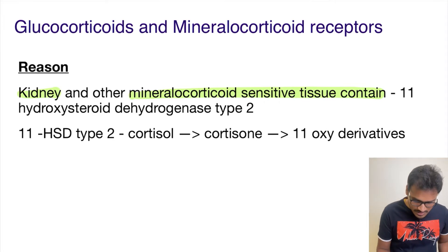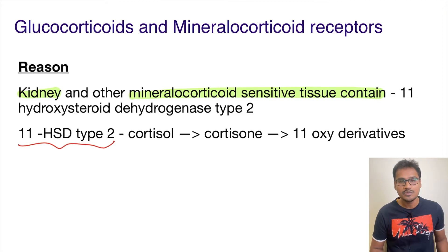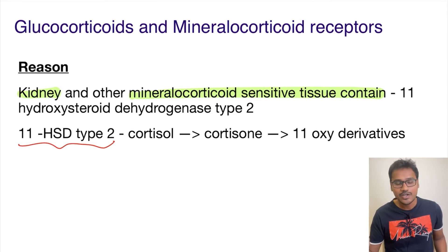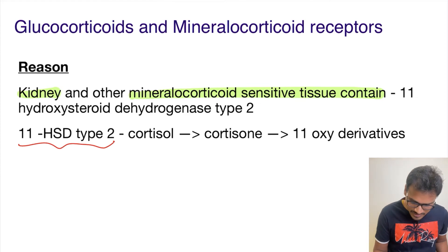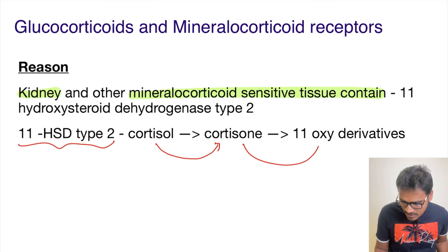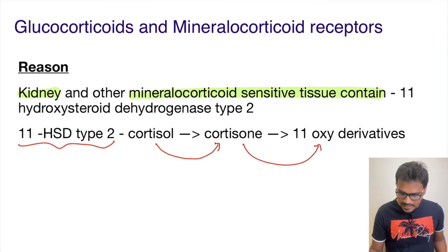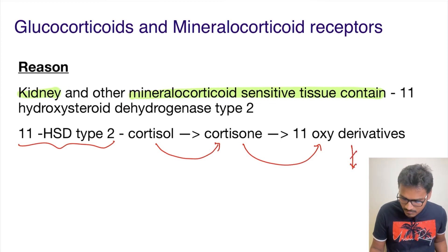The purpose of 11β-HSD type 2 is to convert the active form of corticosteroids into derivatives. These derivatives cannot act on the mineralocorticoid receptors. For example, it converts cortisol to cortisone, and ultimately forms the 11-oxy derivatives of glucocorticoids, which cannot act on the mineralocorticoid receptors.